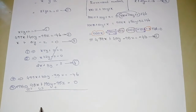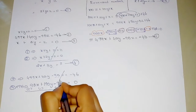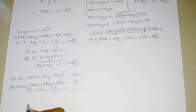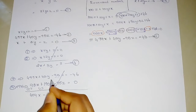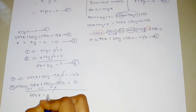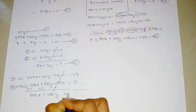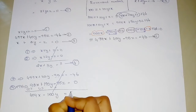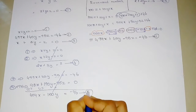After eliminating Z, we get 404X minus 150Y equals minus 46. This is Equation number 5. Now we will solve Equations 4 and 5 together.